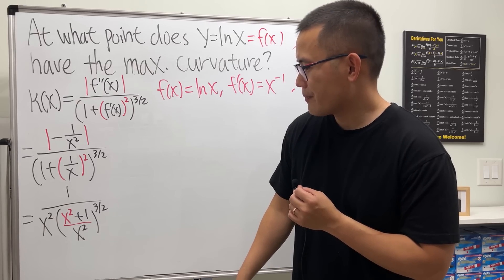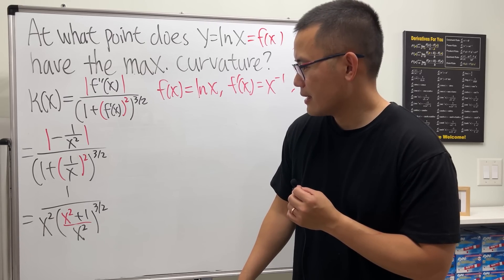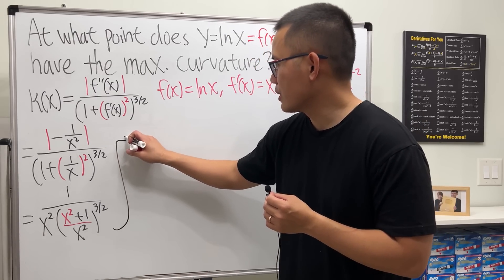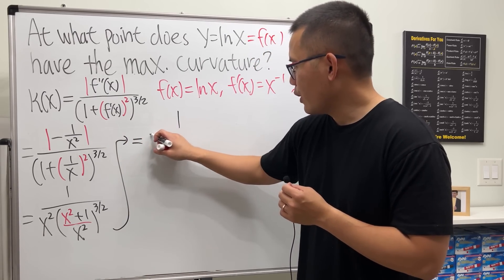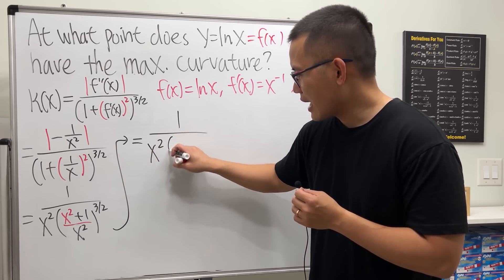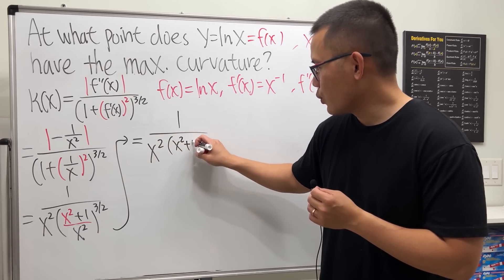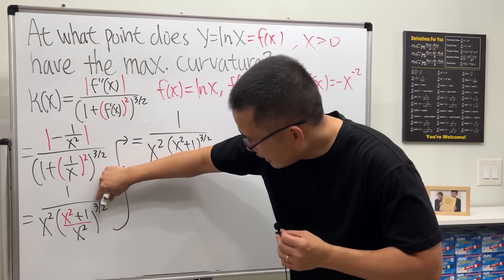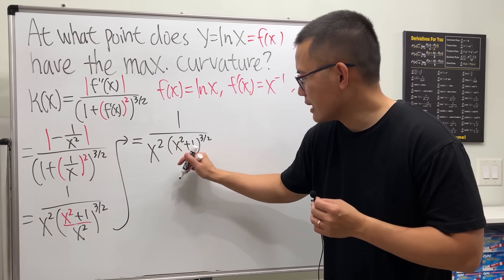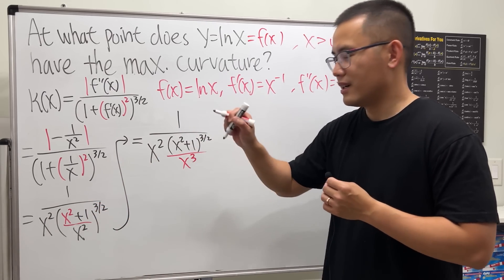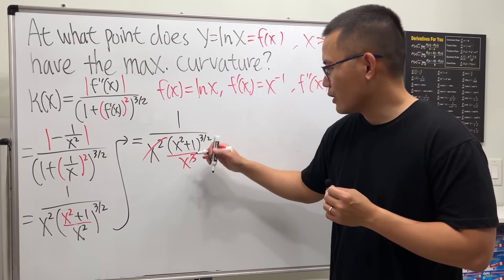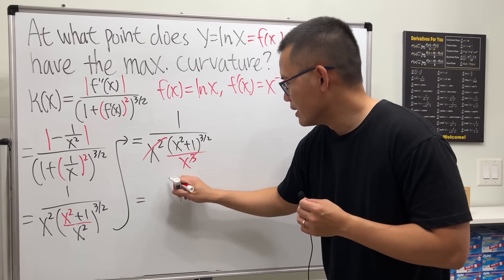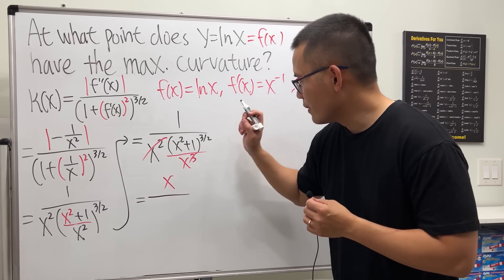Let me write down more steps. We have 1/x² times (x² + 1) raised to the 3/2 power. Take x² and multiply with that 3/2 power — that gives x³. Cancel, cancel, one more — you can put x on the top. So we have x on the top over (x² + 1) to the 3/2.